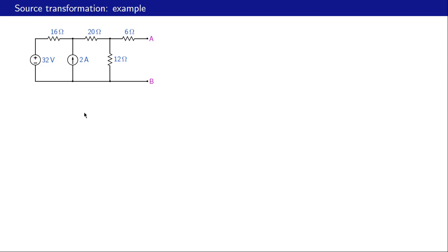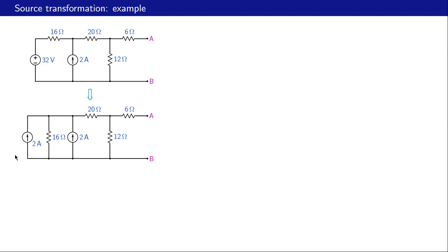We want to find the Thevenin equivalent circuit as seen from a-b. As step one, we convert the Thevenin form — consisting of thirty-two volts in series with sixteen ohms — into its Norton equivalent. Here i-n equals v-th divided by r-th, which is thirty-two divided by sixteen, giving two amperes. And r-n equals r-th, which is sixteen ohms.